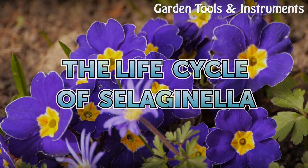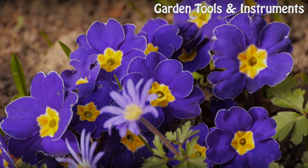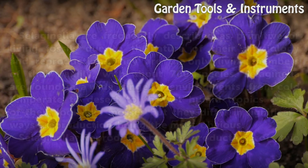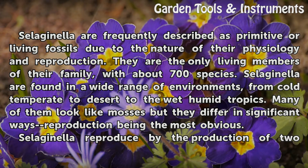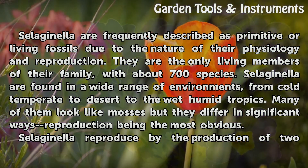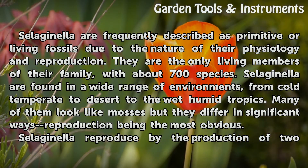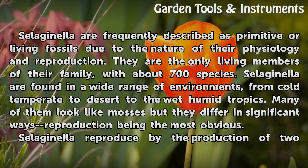The Life Cycle of Selaginella. Selaginella are frequently described as primitive or living fossils due to the nature of their physiology and reproduction. They are the only living members of their family, with about 700 species.